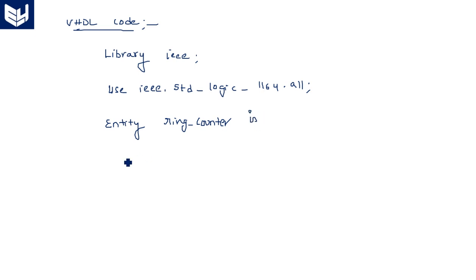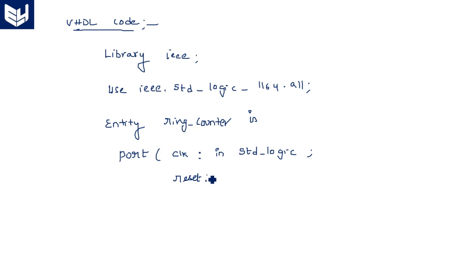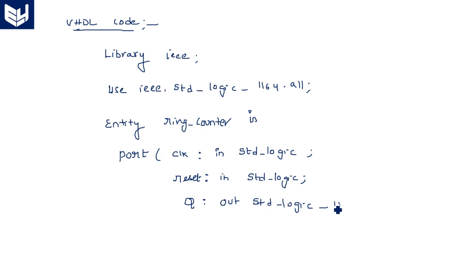Inside the entity, inputs and outputs are defined as ports. The clock input is declared as: clock in std_logic (a single bit). There is also a reset pin to reset all flip-flops initially — reset in std_logic. The output pin q is a 4-bit output declared as: q out std_logic_vector(3 downto 0).